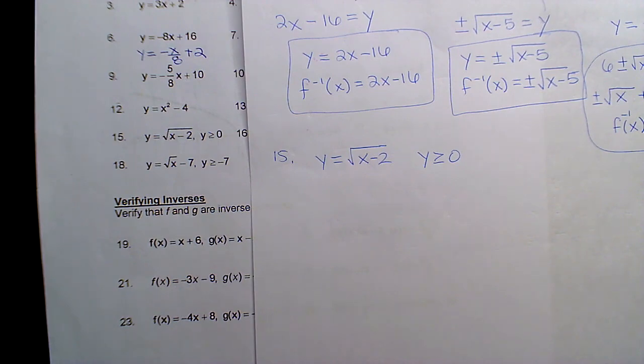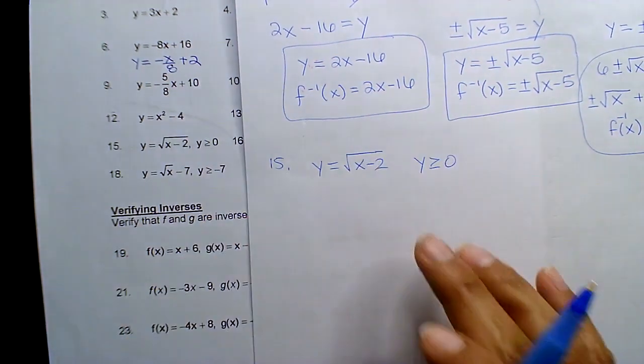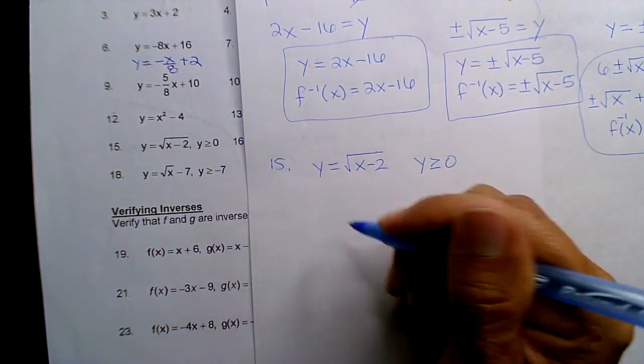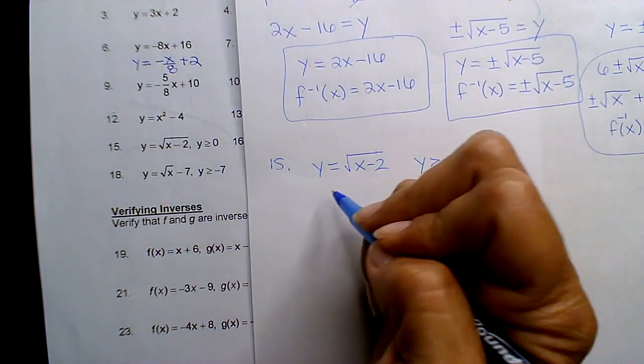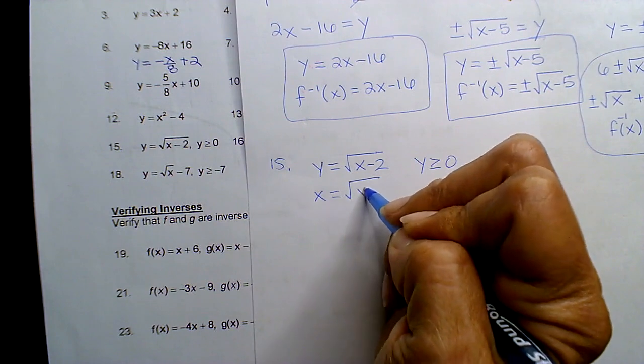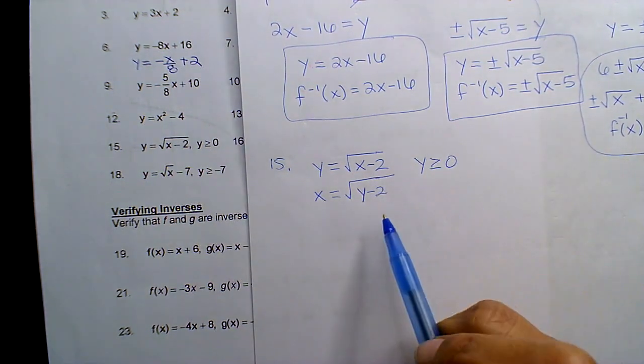This camera only records what's here, like what I'm writing. Alright, so if you switch your X and Y, because the negative two is contained in this radical, it's part of the radicand, you cannot move it.